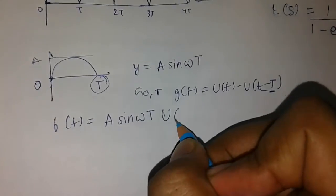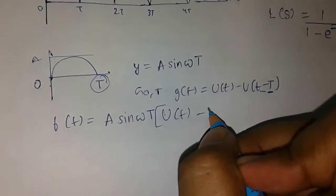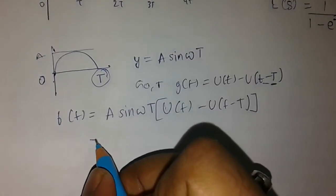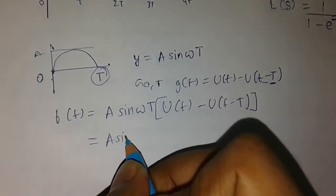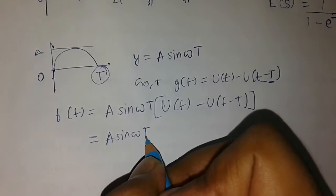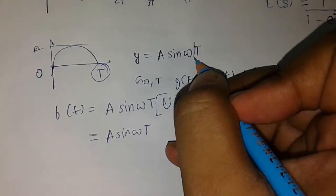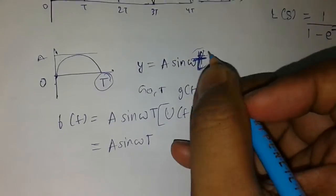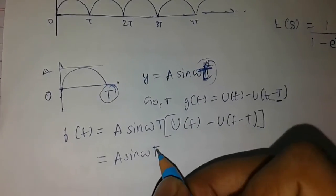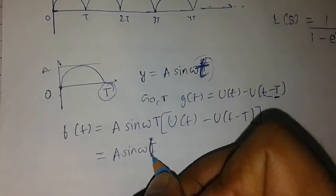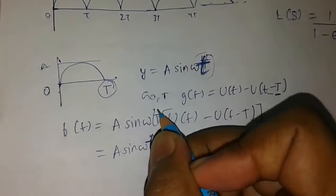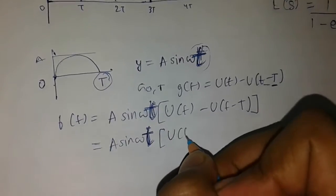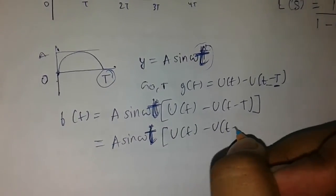I have mentioned in my previous tutorial that any function which lies between 0 and T requires the gate function. So our function will become f(t) = a·sin(ωt) multiplied by the gate function u(t) minus u(t minus T), because the time period is T. So we multiply a·sin(ωt) by [u(t) − u(t − T)].